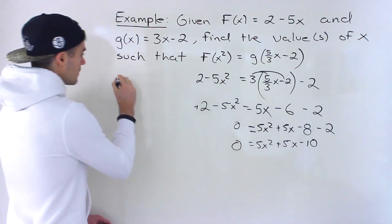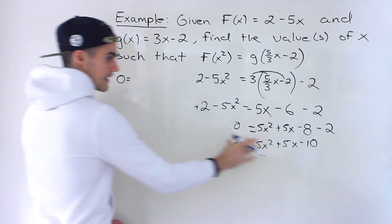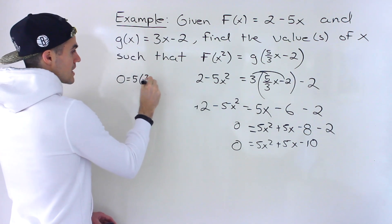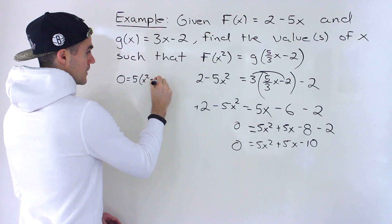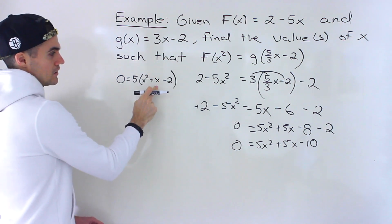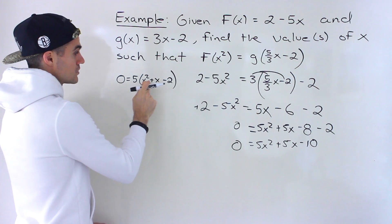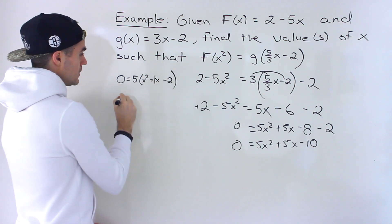And then notice from here, let's continue this here. We could factor out a 5 from everything. So we'd have x squared plus x minus 2. And then notice this—we can factor that. What two numbers multiply to negative 2 and add up to positive 1?